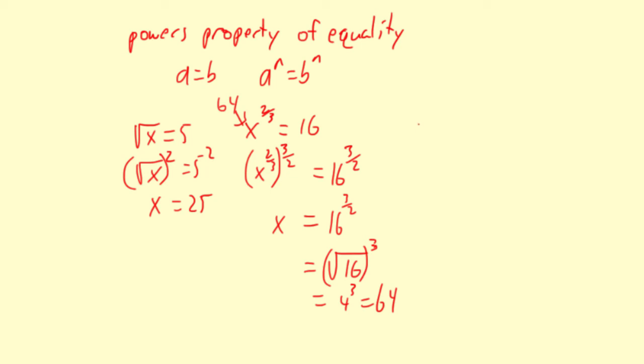What if you have something like this: the 4th root of x equals negative 3. To solve this, raise both sides to the 4th power. The left side simplifies to x, and you get negative 3 to the 4th power, which is 81.